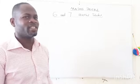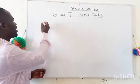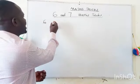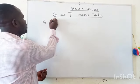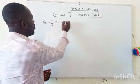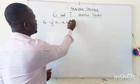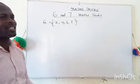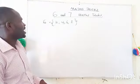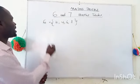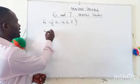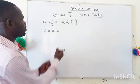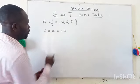When you have six and multiply it with the even numbers two, four, six, and eight, let's see the result you get. For instance, six times two gives us 12.